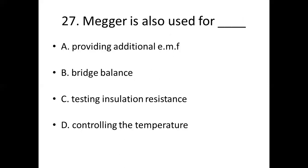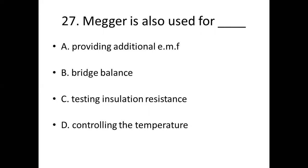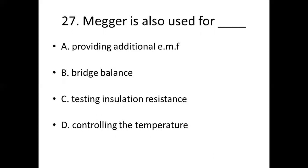27th bit. Megger is also used for dash. Option A: providing additional EMF. Option B: bridge balance. Option C: testing insulation resistance. Option D: controlling the temperature. Answer: Option C, testing insulation resistance.